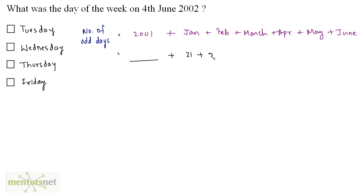January has 31 days, February has 28, March has 31, April has 30, May has 31 and we have June till 4th June, so plus 4.